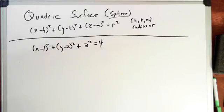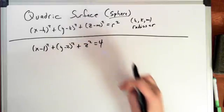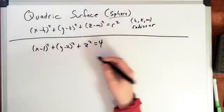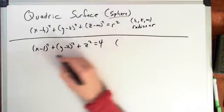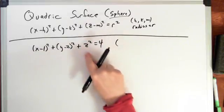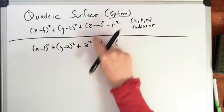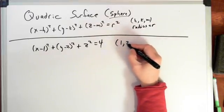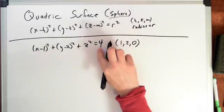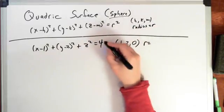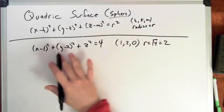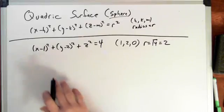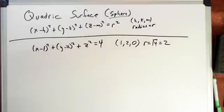So what do we know when we see this equation? Going back to the standard form, we can deduce that the center of this sphere is at 1, 2, and 0 — there's no m term. And the radius is equal to the square root of 4, which is equal to 2. As long as we can get the equation down to this form, it should be pretty easy to deduce where the center is and what the radius is.